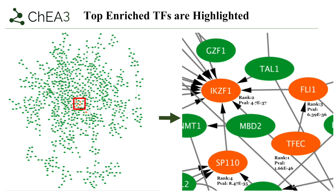Here we can see the CHIA-3 web application interactive visualization of the transcription factor regulatory network. The top enriched transcription factors from the GTEx library are highlighted. A closer look into this network shows clustering of the top four enriched transcription factors: IKZF1, FLI1, and SP110, which were also in the top 10 results of the integrated library. IKZF1 is associated with poor survival in ovarian cancer, overexpression of FLI1 triggers abnormal cell proliferation, and SP110 is seen to regulate genes involved in apoptosis.